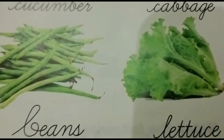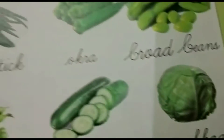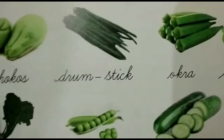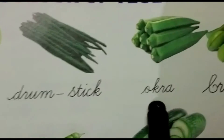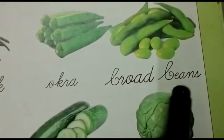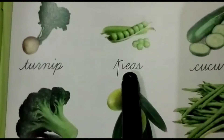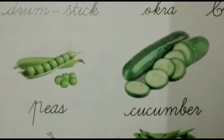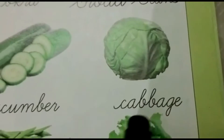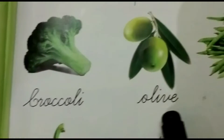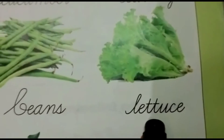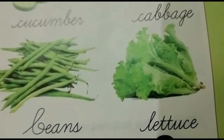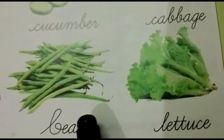See the vegetables — these all vegetables are green color: chokos, drumstick, okra, broad beans, turnip, peas, cucumber, cabbage, broccoli, olive, beans, lettuce. These all vegetables are green color.